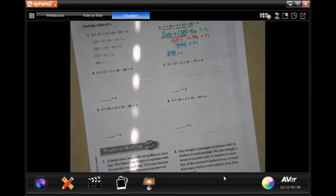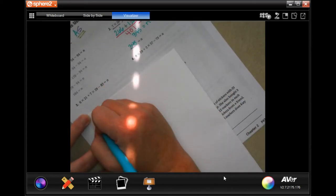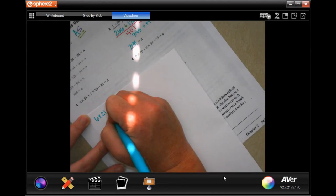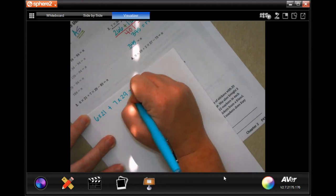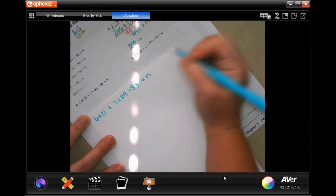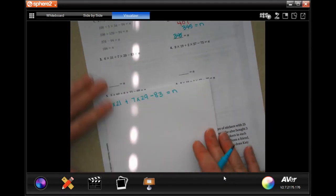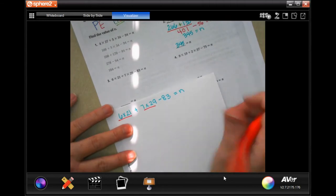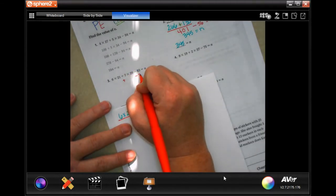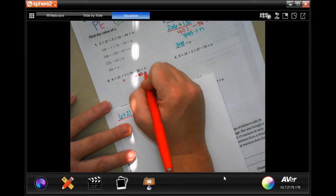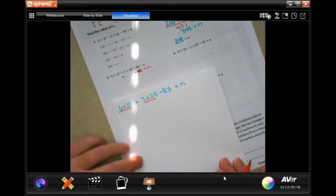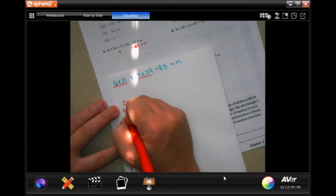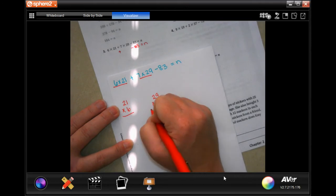Okay, so our next problem says six times 21 plus seven times 29 minus 83 equals n. So now, first, I need to take care of these. So I'm going to rewrite my plus sign and my minus 83 equals n. Then I'm going to do 21 times 6 and 29 times 7.